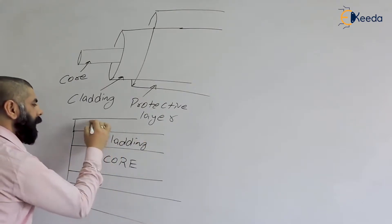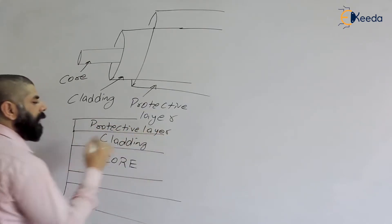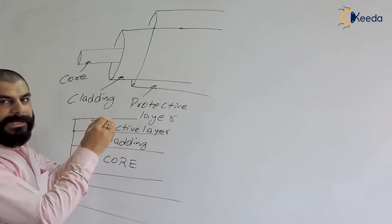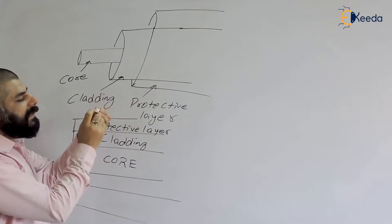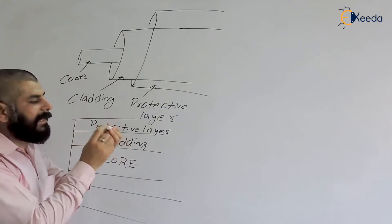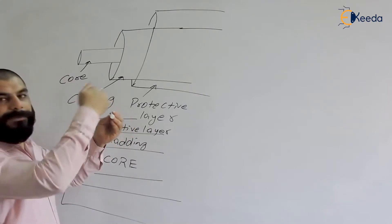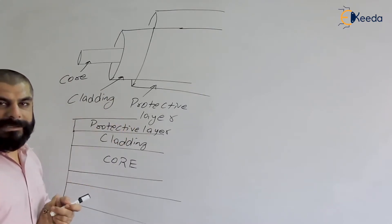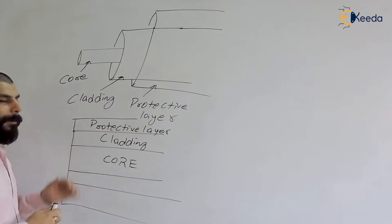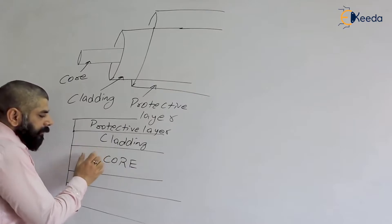There are concentric cylinders present in optical fiber. The inside cylinder is the transparent medium through which light propagates — that is called the core. Over which another layer is present called cladding, and over that another layer called the protective layer. This is the construction of optical fiber.